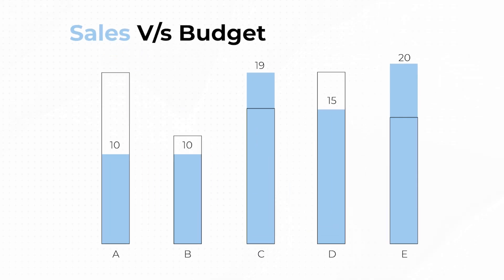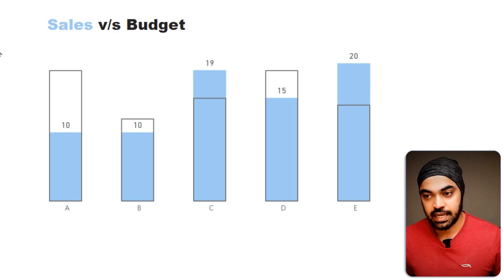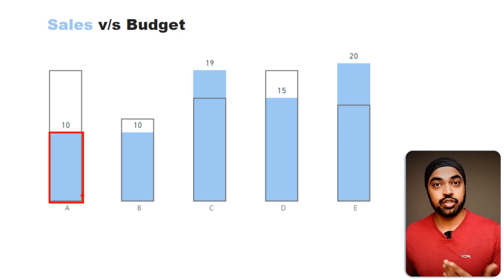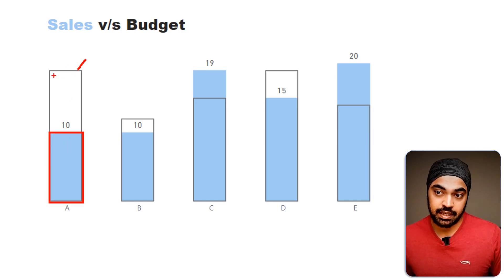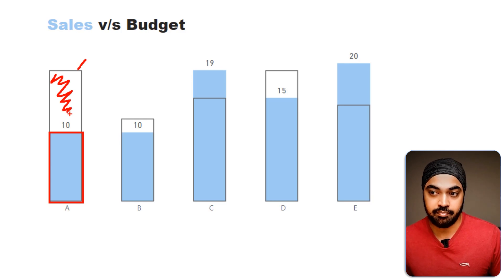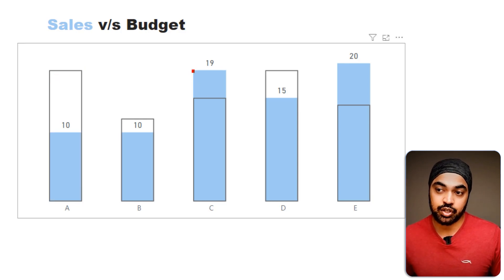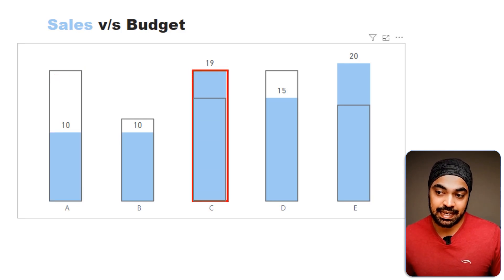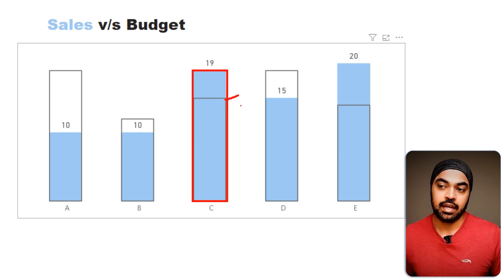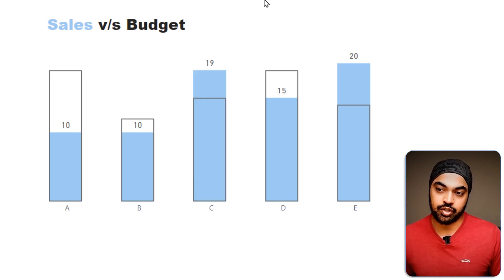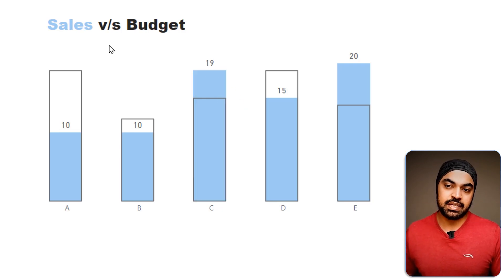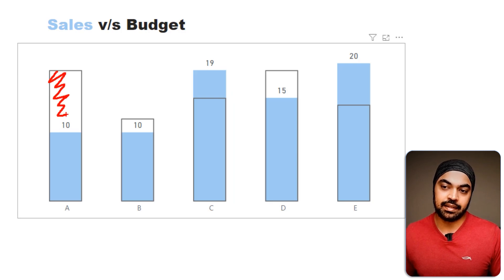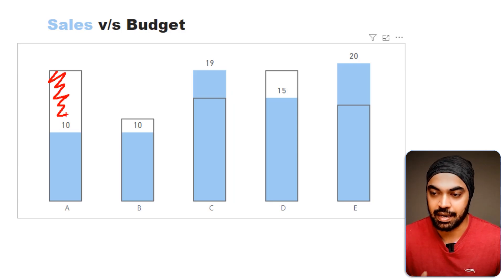My first option is this chart, where sales is presented by the blue rectangle. Anything above that — the budget — leaves an empty area, showing the target is not met. Where sales exceeds the gray rectangle, you can see a surplus. As soon as you see the empty areas, you can quickly understand that the target was not met.